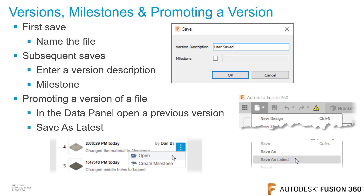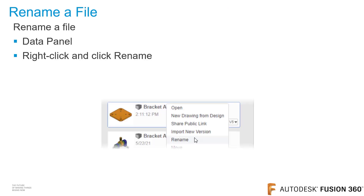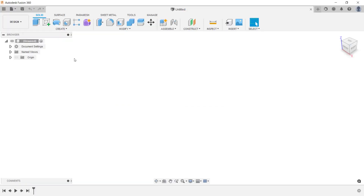A new version of this file will be created. If you need to rename a file inside of Fusion 360, open the data panel and right click on the file you want to rename. Then from the menu, click Rename. Assemblies that reference this file will automatically be updated to reflect the new name. There's nothing you need to do. Now inside of Fusion 360, let's get started by looking at file history and dependencies.